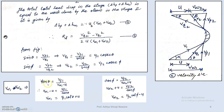Next, from the velocity triangles: tan θ = Vf1 / (Vw1 − U), so Vw1 = Vf1 · cot θ + U. Similarly, tan φ = Vf2 / (Vw2 + U), so Vw2 = Vf2 · cot φ − U.